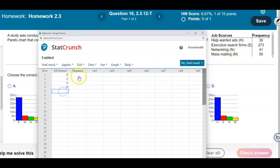And then we're going to put the frequency in there. So we have 30 for H, 273 for E, 41 for N, and 56 for M.